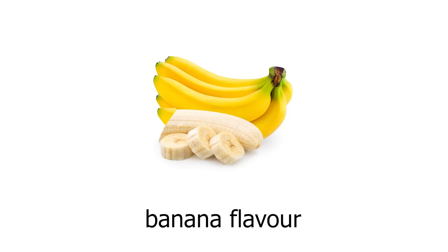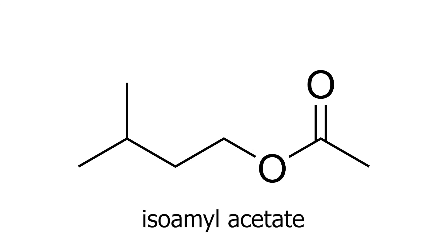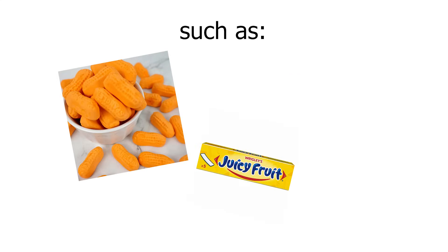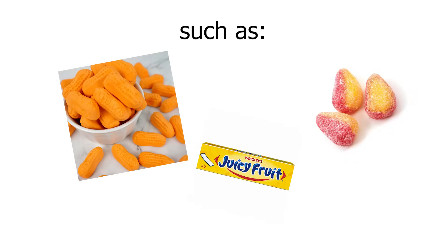The artificial banana flavor I'm talking about is isoamyl acetate, which is a compound used to confer banana or pear flavor in foods such as circus peanuts, Juicy Fruit, and pear drops. And what you really need to make it is some isoamyl alcohol and some vinegar.